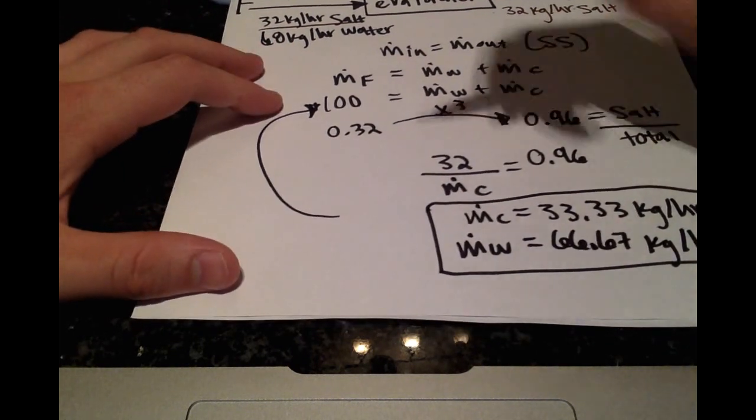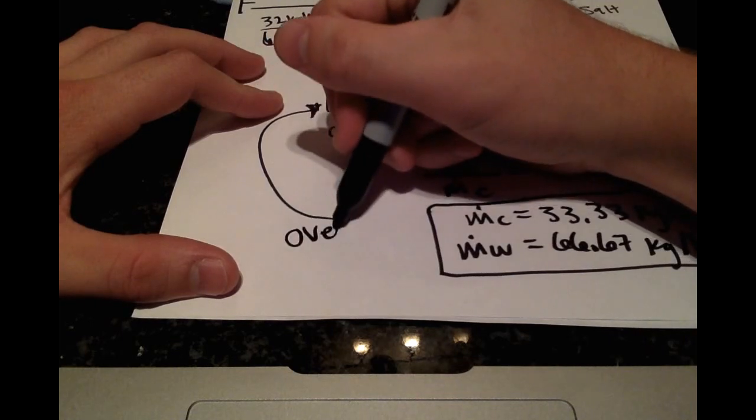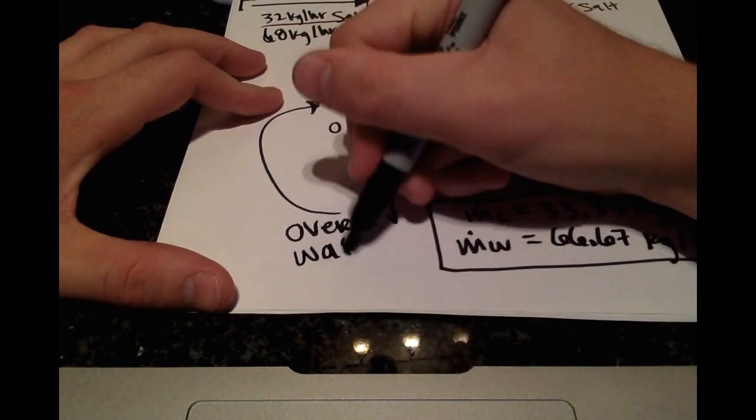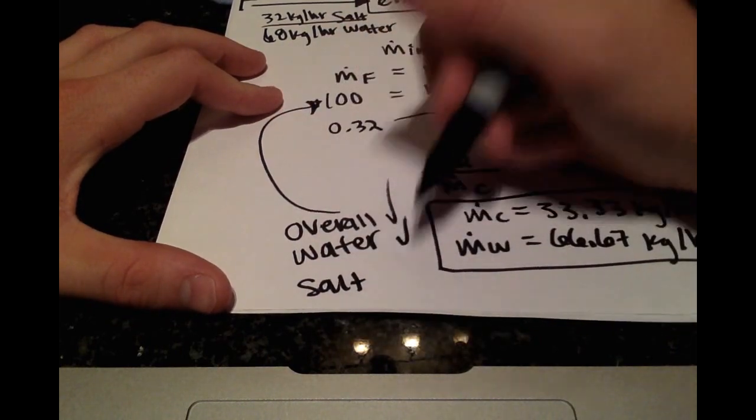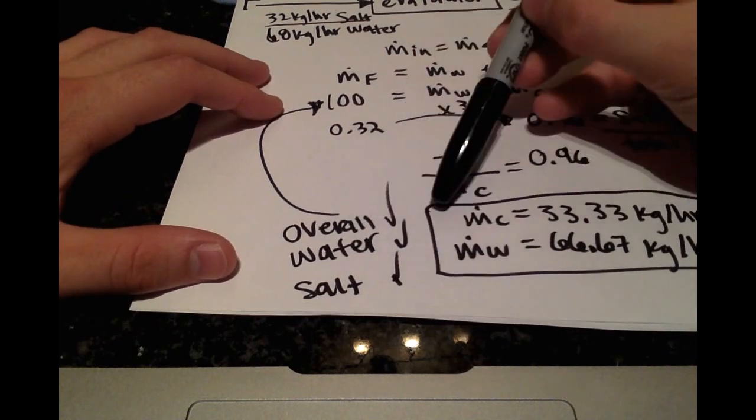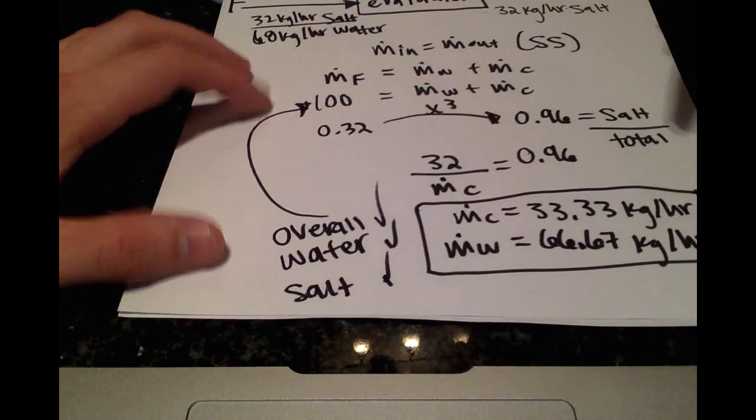And just as a self-check, you can look at the overall mass balance, the balance of water, and the balance of salt. And you will see that looking at what comes in and what comes out, all of these do balance out.